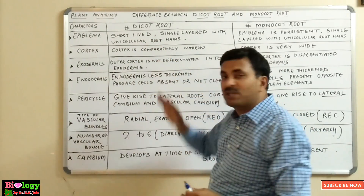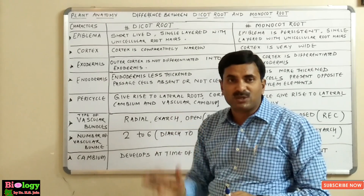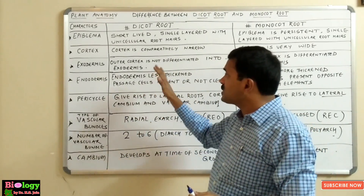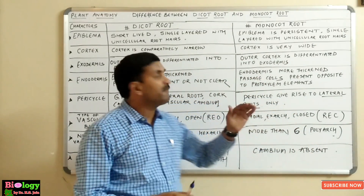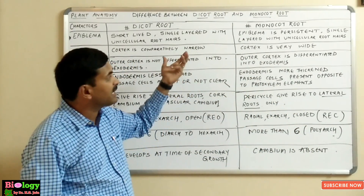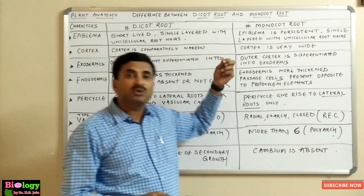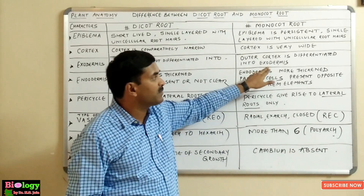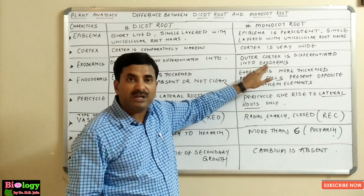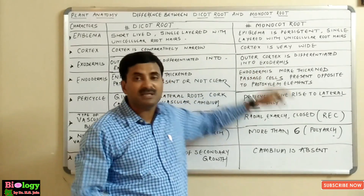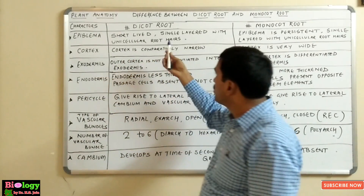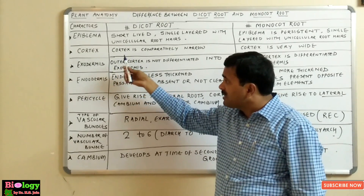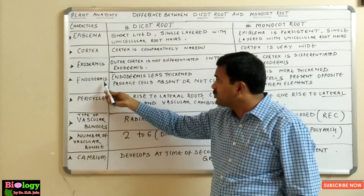In the dicot root, the outer cortex is not differentiated into exodermis — exodermis is altogether absent. But in the monocot root, the outer cortex is differentiated into a distinct layer called exodermis. Just below the cortex region is the endodermis.